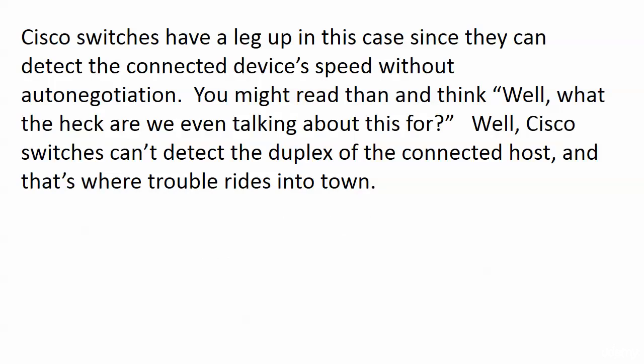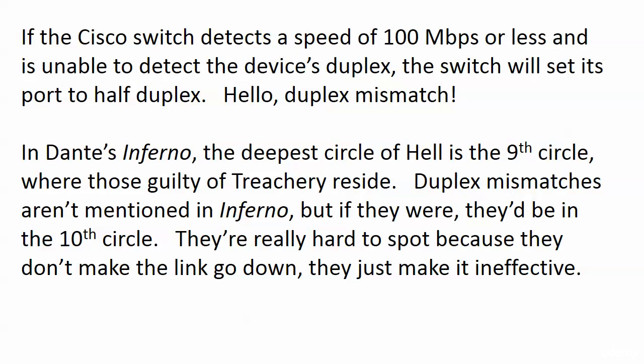Cisco switches have an advantage here because they can detect a connected device's speed without auto-negotiation. But the problem is Cisco switches can't detect the duplex of that connected host — and that's where trouble rides into town. If the Cisco switch detects a speed of 100 meg or less and cannot detect the device's duplex, the switch sets its port to half duplex. We end up with what sounds innocent: a duplex mismatch.